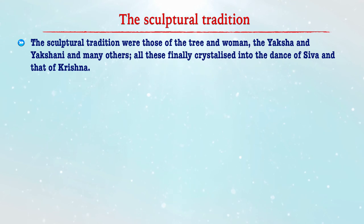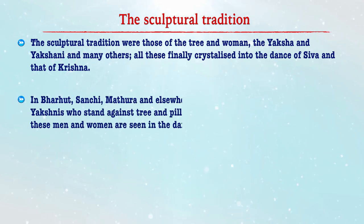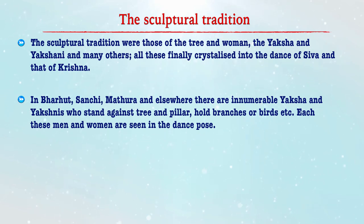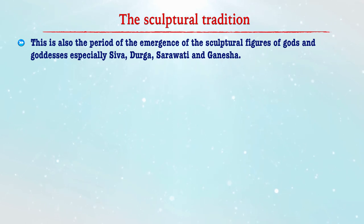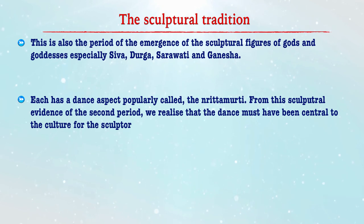After understanding the time periods for dance, let us now move to the archaeological and literary evidences. It was in the second period that we have various evidences of the evolution of Indian dance. The motifs in the cultural tradition were those of tree and woman and the Yakshigani. In Bharhut, Sanchi, Mathura and Ellora, there are innumerable Yaksha and Yakshigani who stand against trees and pillars, hold branches, and are seen in dance poses. This was also a period of the emergence of sculpture figures of gods and goddesses, especially Shiva, Durga, Saraswati and Ganesha. Each had a dance aspect and it was popularly called the Nritya Murthy.